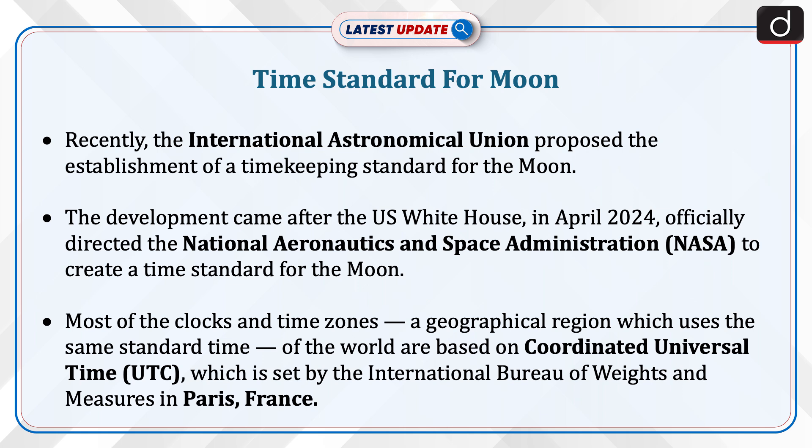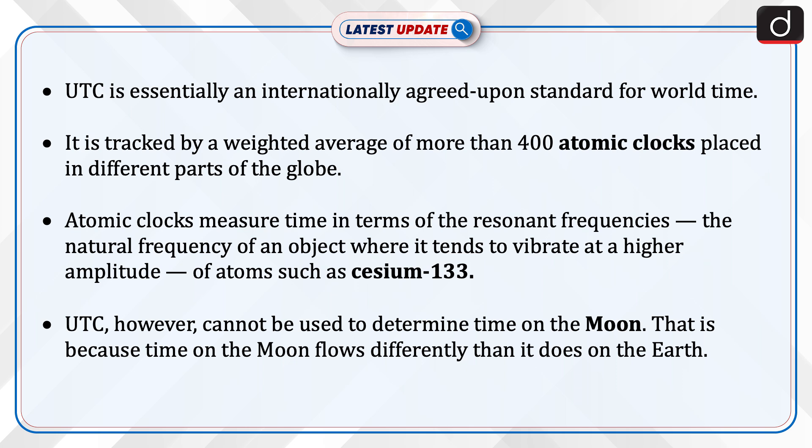Most of the clocks and time zones — a geographical region which uses the same standard time — of the world are based on Coordinated Universal Time, which is set by the International Bureau of Weights and Measures in Paris, France. UTC is essentially an internationally agreed upon standard for world time, tracked by a weighted average of more than 400 atomic clocks placed in different parts of the globe.